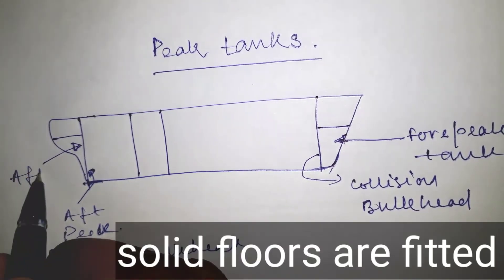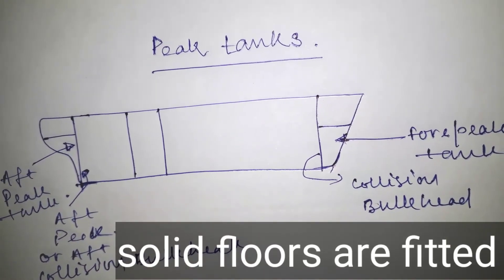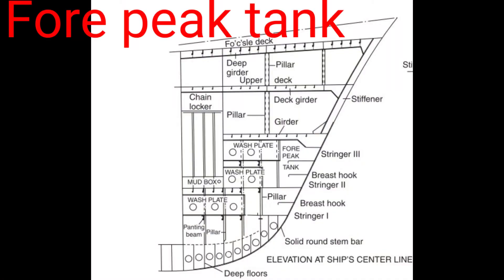The cellular double bottom arrangement is discontinued, and solid floors are fitted at every frame space. Above the floors, a wash plate divides the tank longitudinally into two.